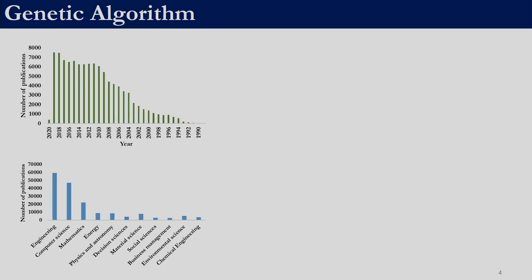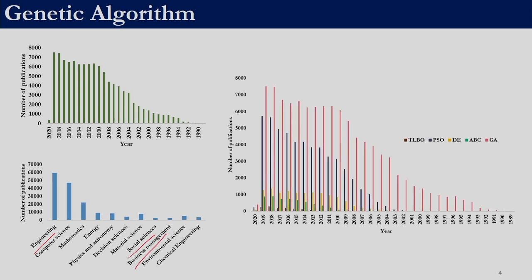This shows the popularity of genetic algorithm over the past two decades. There has been an exponential increase in the number of publications which use genetic algorithm. Like all our previous meta-heuristic techniques, genetic algorithm is used in diverse areas, right from engineering to social sciences, business management and so on. This shows the comparison of the meta-heuristic techniques which we are learning in this course. Genetic algorithm has a clear edge over other techniques. Throughout the years it has been widely used, followed by particle swarm optimization. For the other techniques they were recently proposed in the last decade, unlike genetic algorithm which has been there for quite some time.